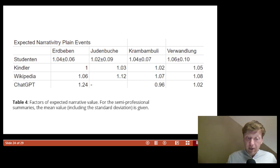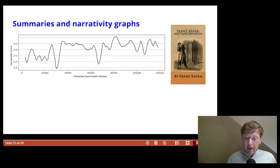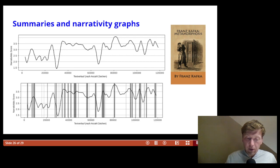In a second step, we compared the narrativity curves with the summaries using the calculation of the peak prominence factor. Each event is now assigned the peak prominence value if it represents a local maximum, 0 otherwise. Now we proceed as above and compare the expected prominence value with the actual one.